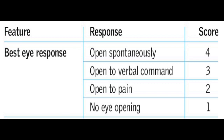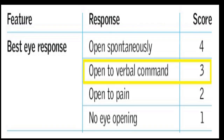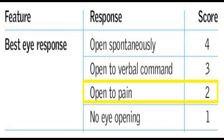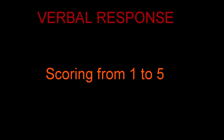To summarize the best eye-opening response section: E4 — opens eyes spontaneously; E3 — opens eyes to verbal command; E2 — opens eyes to pain; and E1 — no eye-opening response. The next parameter in the Glasgow scale is verbal response.